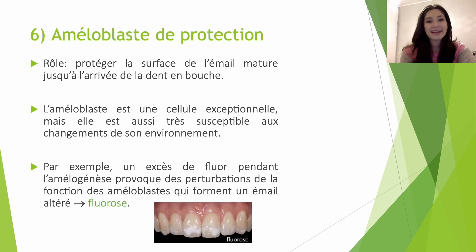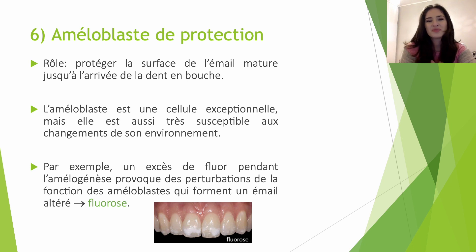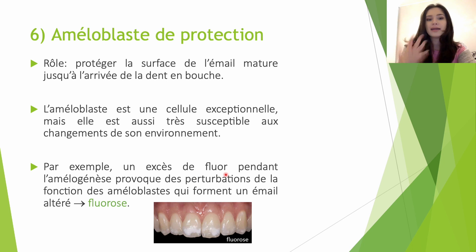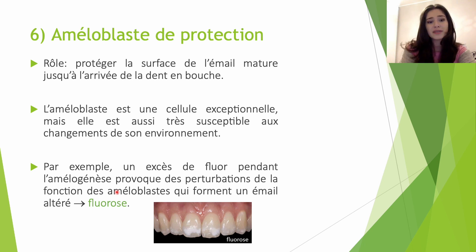On arrive à la dernière étape de la vie d'un améloblaste : l'améloblaste de protection. Son rôle est simplement de protéger la surface de l'émail mature jusqu'à l'arrivée de la dent en bouche. L'améloblaste est une cellule exceptionnelle mais très susceptible aux changements de son environnement. Un excès de fluor pendant l'amélogénèse va provoquer des perturbations de la fonction des améloblastes, qui vont former un émail altéré : c'est la fluorose, clairement perceptible sur les deux incisives centrales.